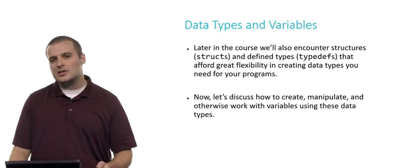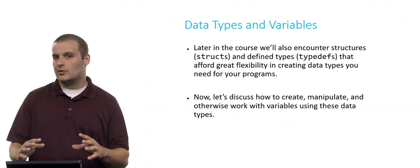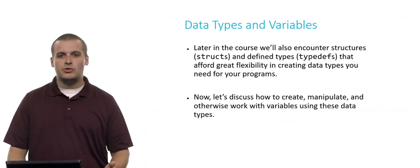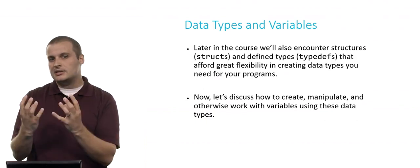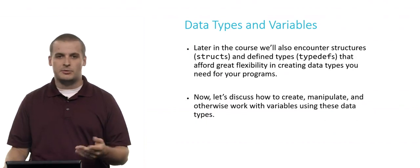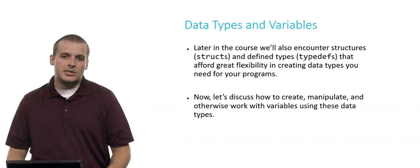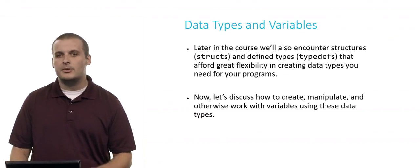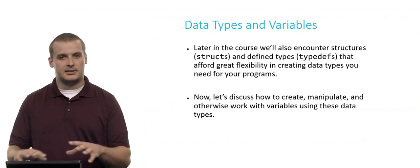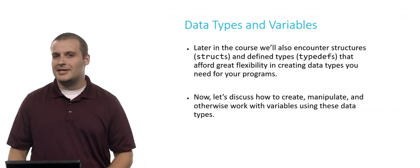Now later on in the course, we'll also see that that's not the entire story either. We'll encounter things called structures, which allow you to group maybe an integer and a string into one unit. And we'll also learn about defined types, which allow you to create your own data types. We don't need to worry about that for now, but just know that that's something on the horizon. So now that we've learned a little bit about the basic data types and the CS50 data types, let's talk about how to work with variables and create them using these data types in our programs.